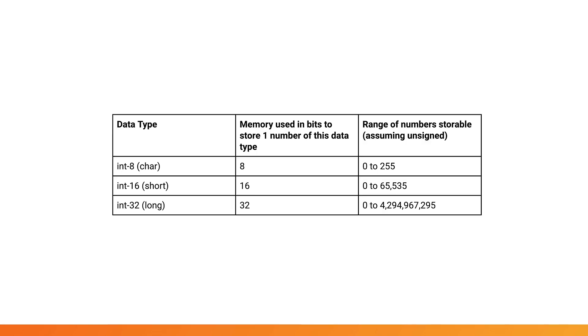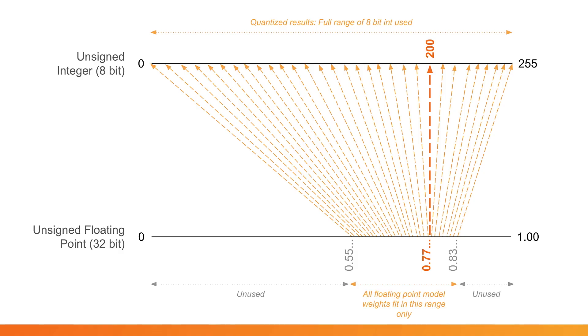If you go back to your high school days, you may remember that computers have different ways to represent numbers depending on the range of numbers that you want to store, as shown in this table. Clearly, the more memory you use to represent a number, the larger range of numbers you can potentially store, but it comes with a memory cost. When building and training a model, it's very common that the 32-bit float type is used to store the model weights. However, it turns out that even if you reduce the precision to an 8-bit integer for the weights, the model does not lose too much accuracy. Quantization simply means reducing the precision of the numbers stored in the model to make the resulting file size of the model smaller, and therefore download faster, which is great for the web world.